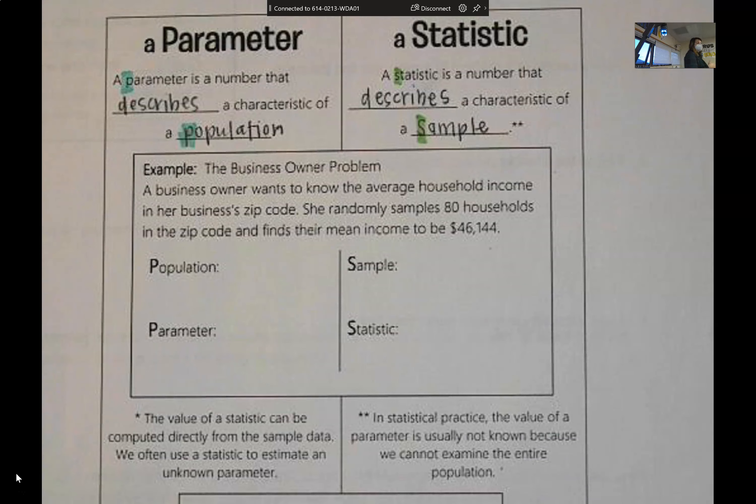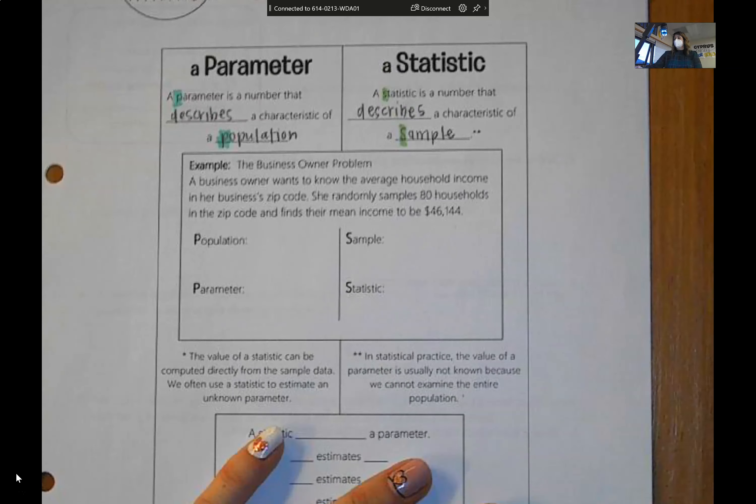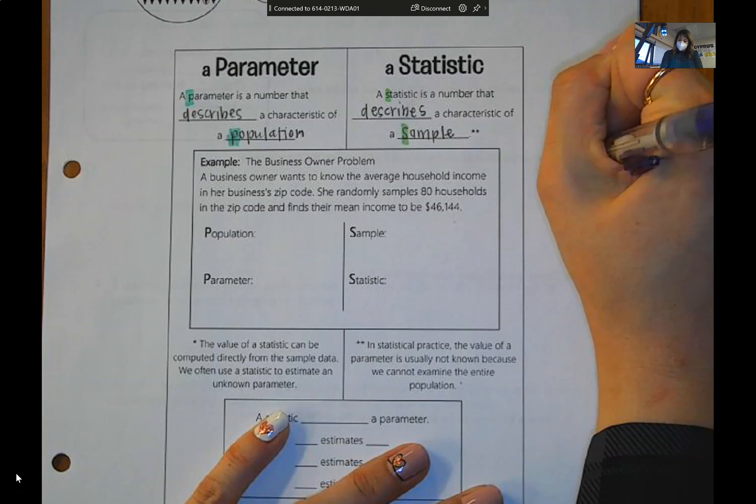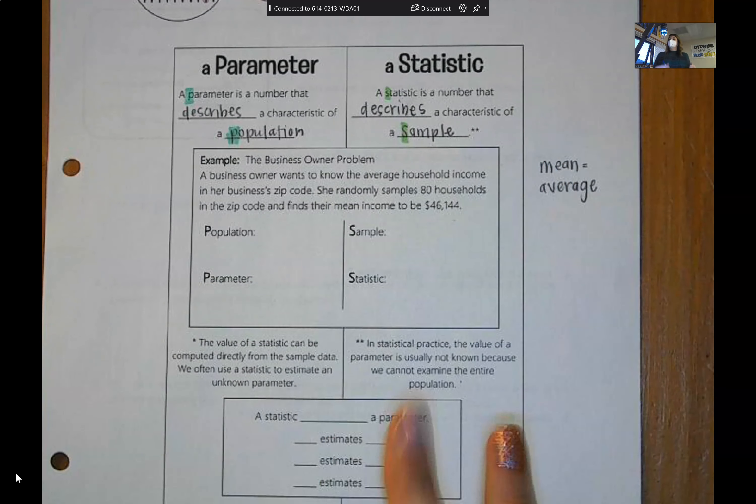So if it's coming from the population, it's called a parameter. And if it's coming from a sample, it's called a statistic. So just like I did on the last one, I'm going to highlight the S in statistic and the S in sample. So let's get like a real example of where you would need to be able to distinguish between the two. So we have a business owner problem. A business owner wants to know the average household income in her business's zip code. She randomly samples 80 households in the zip code and finds their mean income to be $46,144. So let's just remind ourselves, some of us might need this, that the mean is the same thing as the average.